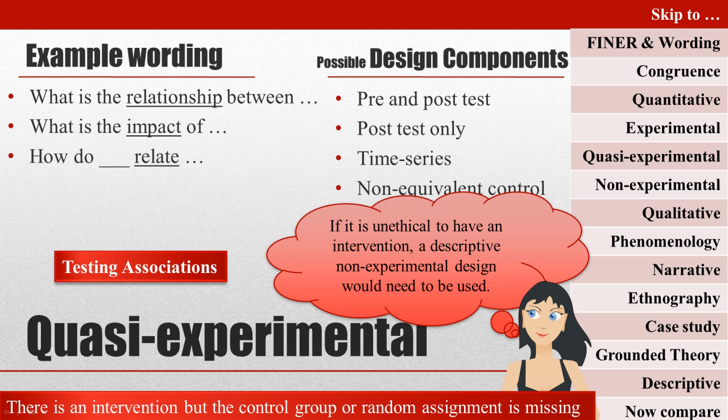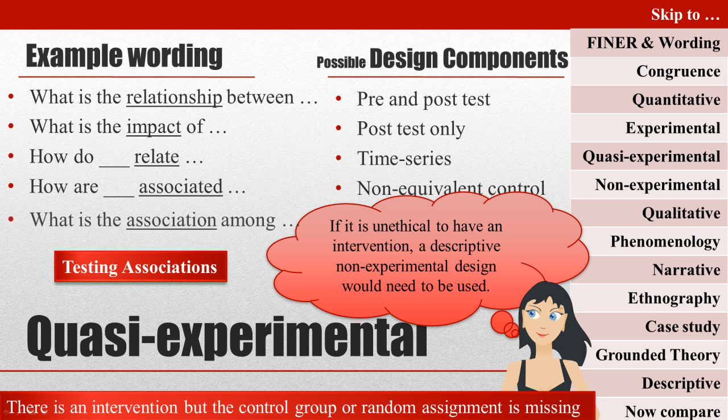Quasi-experimental studies will have questions that look a lot like experimental studies with slightly different wording in some cases. Technically, the word 'cause' should not be used for quasi-experimental research questions, since they cannot prove cause and effect relationships. Instead, words like 'associated with' are used. Therefore, the wording of an experimental question may remain congruent with a quasi-experimental design, as long as the wording is not too strong.